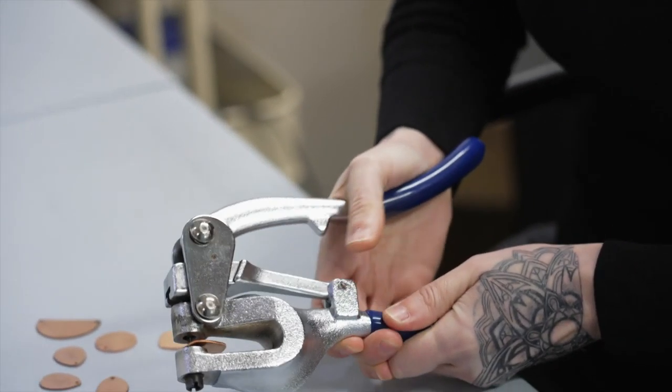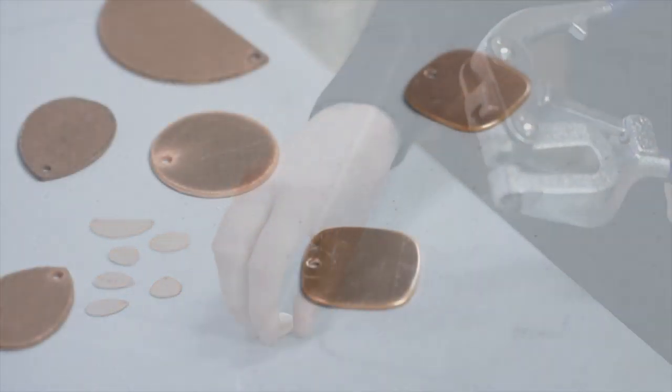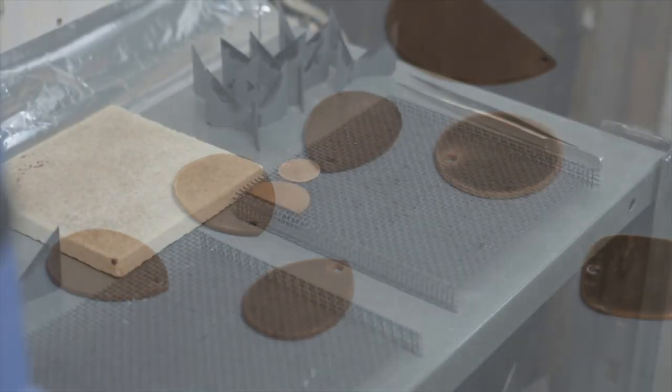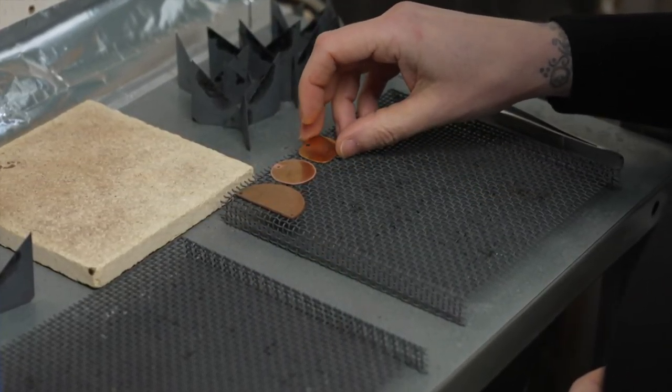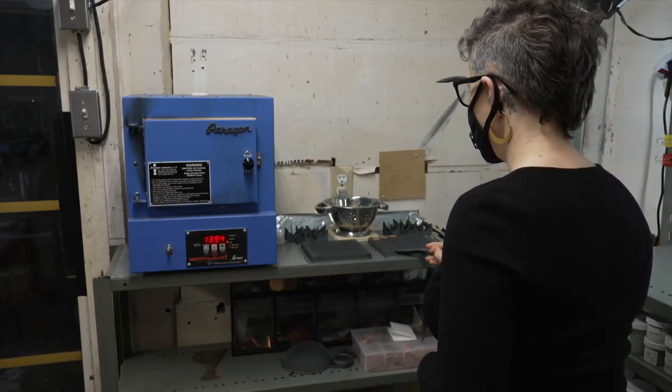Holes are punched where the finding will later be attached. Findings are things like chains, links and earring hooks. The pieces are laid out on a tray, ready for the first firing in the kiln. This step burns away any possible contaminants on the copper.